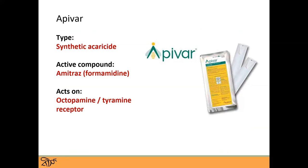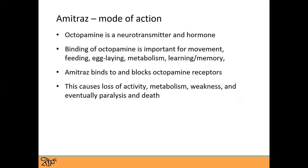The next synthetic acaricide is Apivar, and the active compound is amitraz, which is a formamidine. This one acts on a different receptor — the octopamine or tyramine receptors. Octopamine is both a neurotransmitter and a hormone; it's important for movement, feeding, egg laying, metabolism, learning, and memory. Amitraz binds to and blocks those octopamine receptors, preventing a lot of these activities from taking place. It causes loss of activity, loss of metabolism, weakness, and eventually paralysis and death.